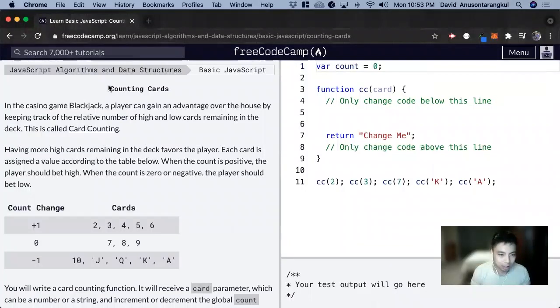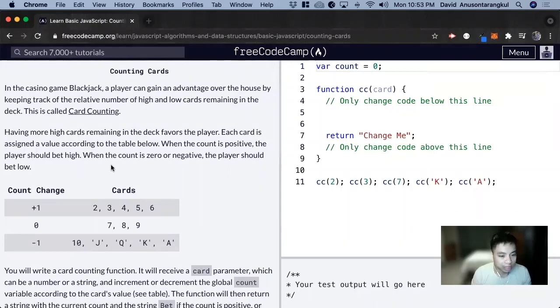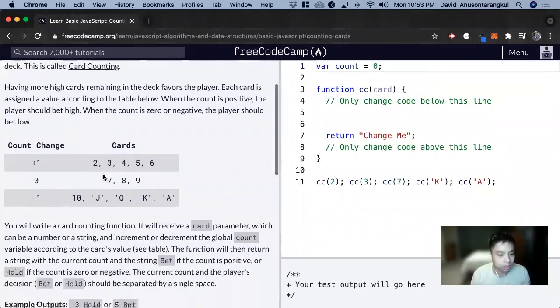So this exercise is called counting card and we're going to apply what we learned so far about functions, about switch statements to replicate this card counting function. So what it wants us to do is that we have a function that takes in card and the card could be a string, could be any of these possible strings or numbers here.